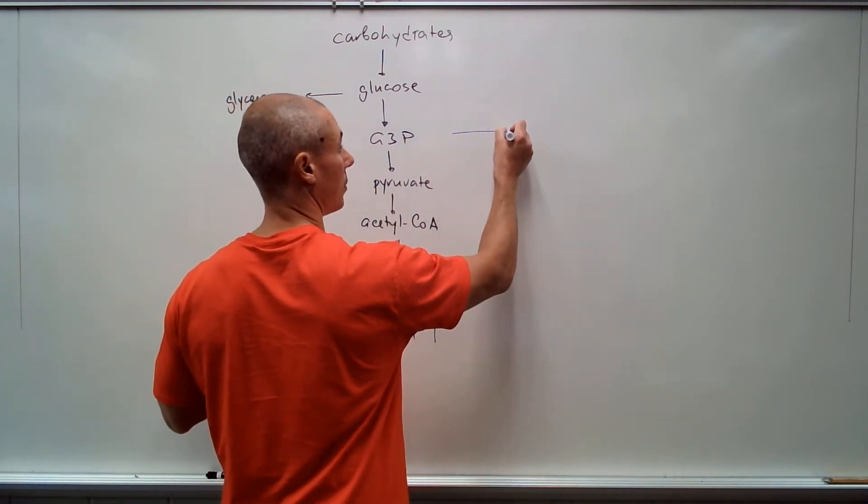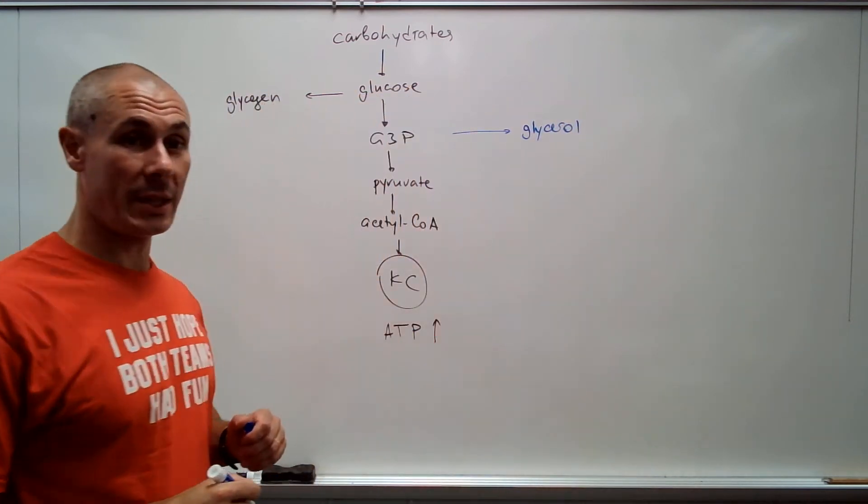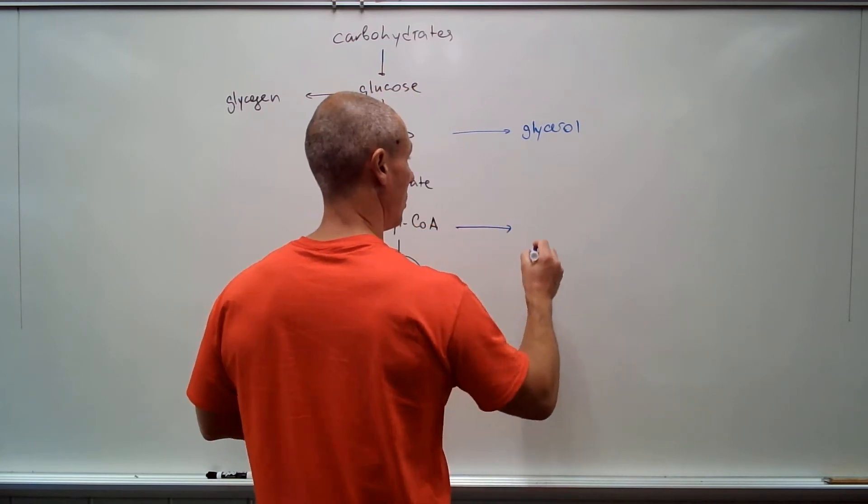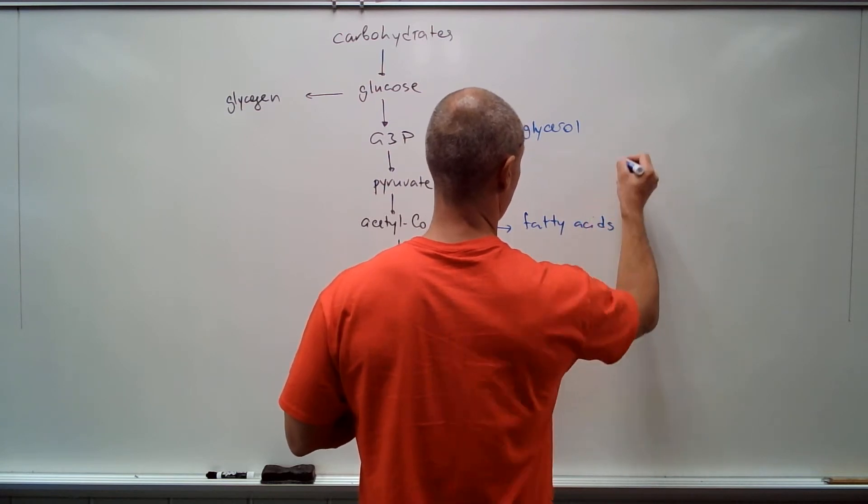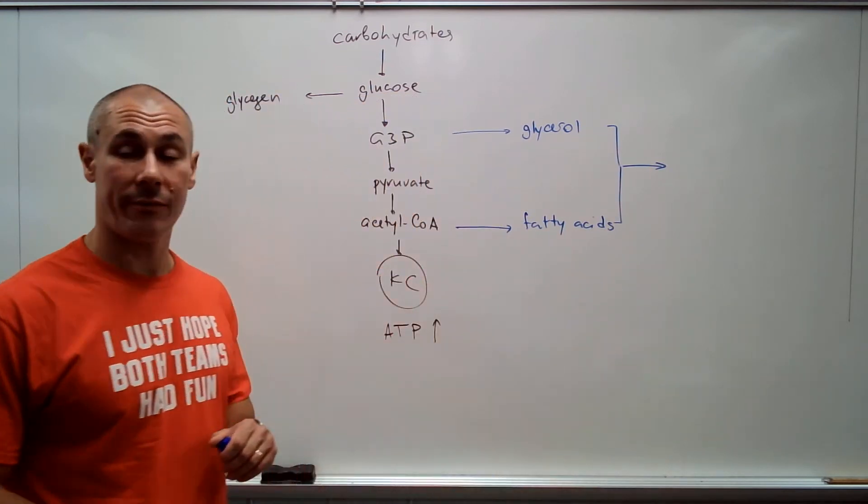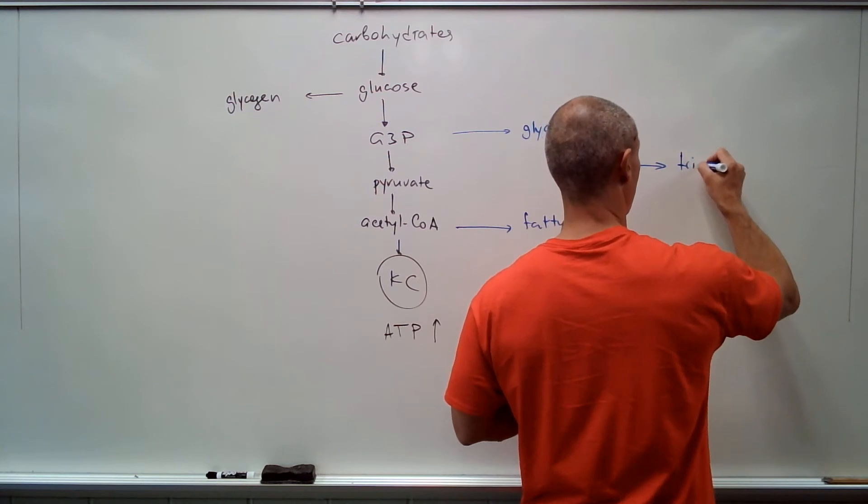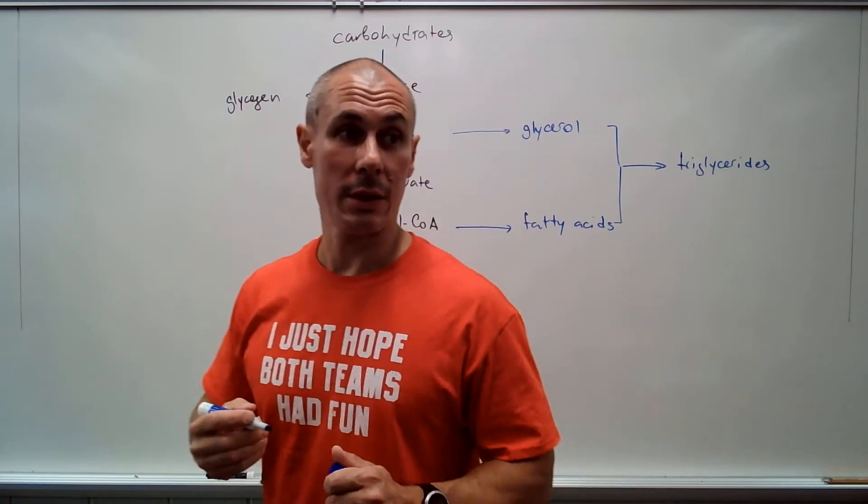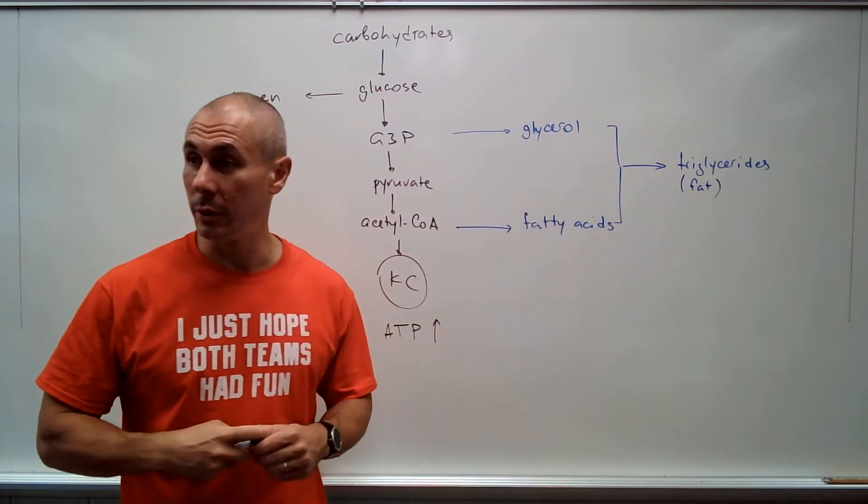Fat. And this is how it's going to happen. G3P will be converted to glycerol, and acetyl-CoA will be converted to fatty acids. Then glycerol and fatty acids will be combined to form triglycerides. This is fat.